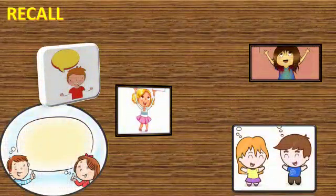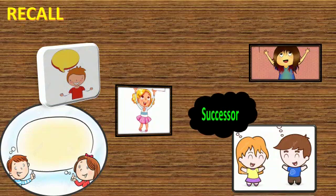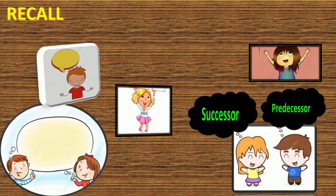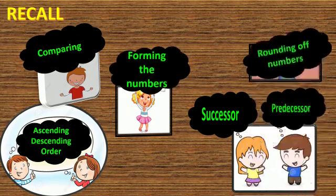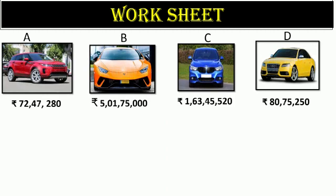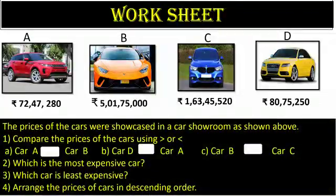Let's quickly recall what we learnt today: successor, predecessor, comparing, ascending and descending order, forming numbers, and rounding of numbers. Four cars were showcased in a showroom along with their prices. Answer the worksheet based on the price of the cars. Thank you.